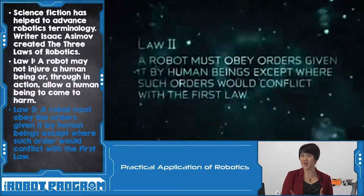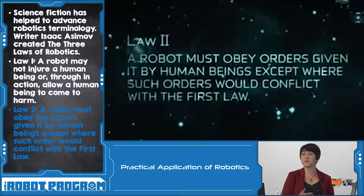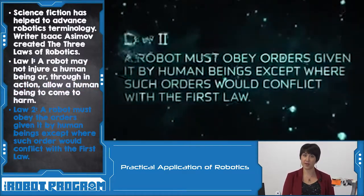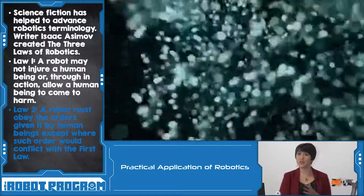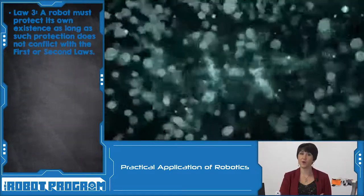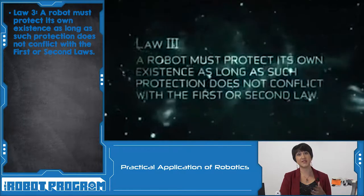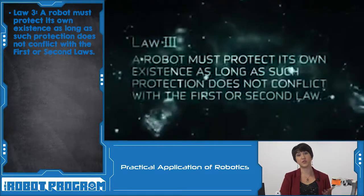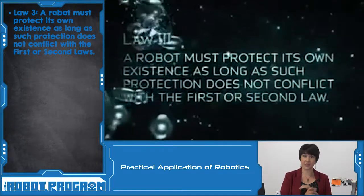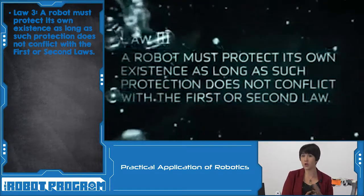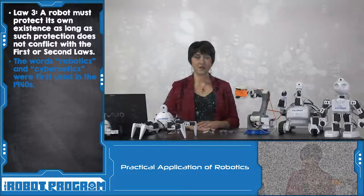The second law is that a robot must obey orders given to it by a human being, unless those orders would conflict with the first law. The third law is that a robot must protect its own existence, unless that conflicts with the first two laws — in which case a robot has to take commands from a human or not cause harm to come to a human being or humanity.